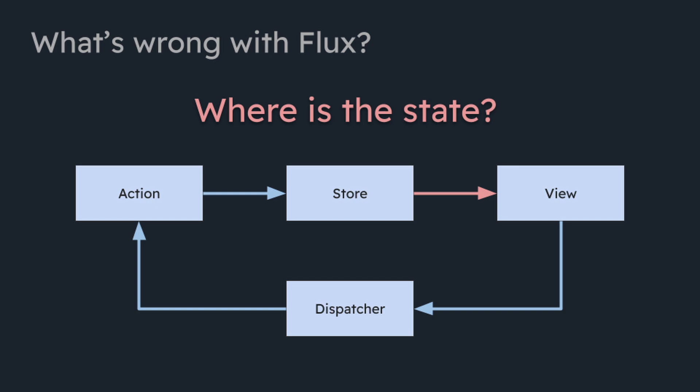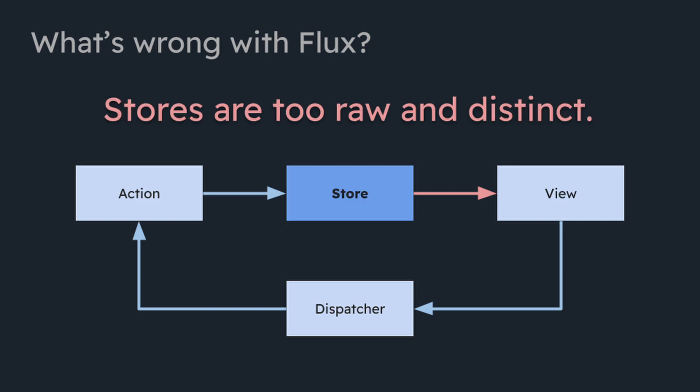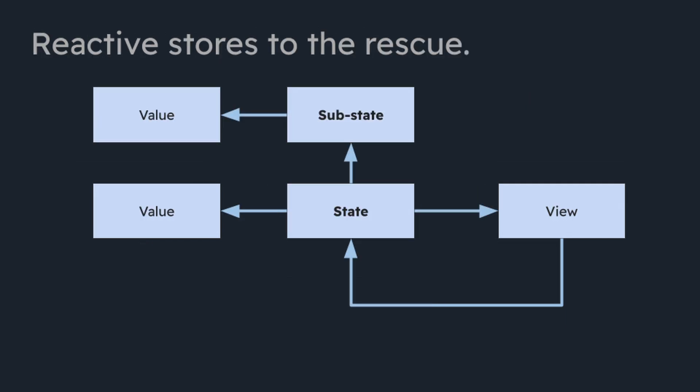That's pretty much the second problem as well — where is the state in Flux? You might say the state is in the store. But the problem is that in Flux, the view is doing too much on the store side but way too little on the action side. We want to be informed proactively by the state layer within the view layer, and the way we do that is through signals. We don't need to re-render all the time if the state hasn't changed. Actions have been removed entirely because actions are simply methods operating on the state.